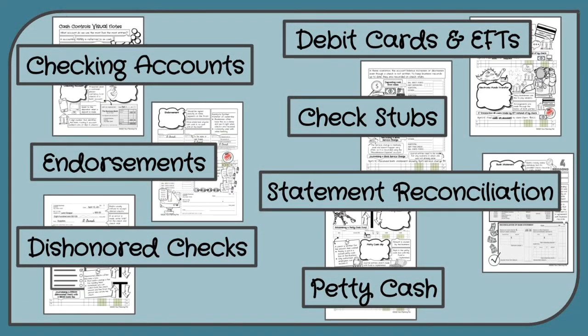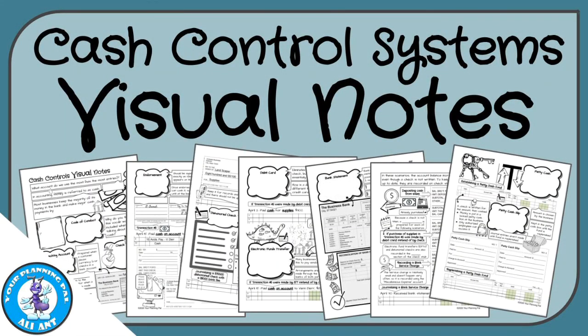Those are the cash control systems notes. We've covered checking accounts, endorsements, dishonored checks, debit cards and electronic funds transfers, bank statement reconciliation, check stubs, and petty cash. You can go back and add color or notes in the margins. Thanks for watching.